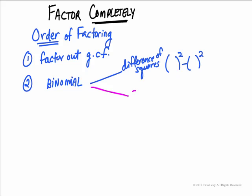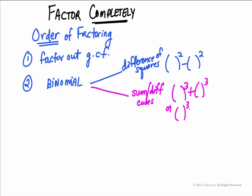The other possibility is sum or difference of cubes. So it'll either be something cubed plus something cubed, two terms, or something cubed minus something cubed. So if you have two terms, these are the two possibilities for factoring: they're either difference of squares or sum or difference of cubes.